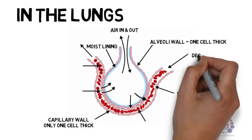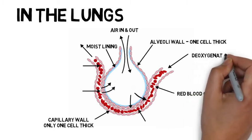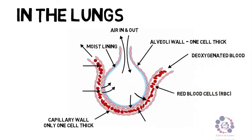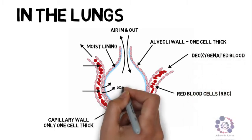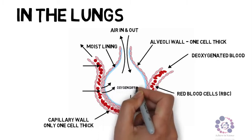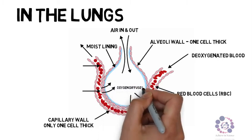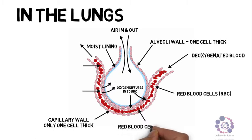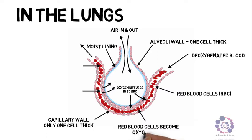Blood enters being deoxygenated. The oxygen flows in, and oxygen diffuses from the air sac into our red blood cells. The red blood cells then become oxygenated because of the presence of haemoglobin within their blood, to form oxyhaemoglobin.